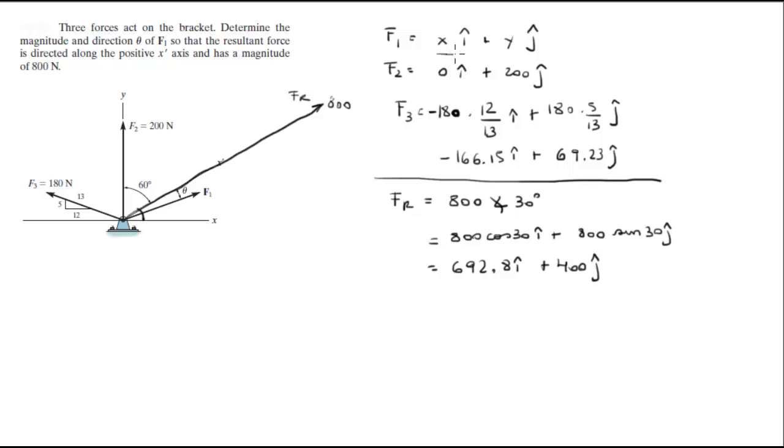Now all you got to do is add the x's together, and the x's are going to equal this number. So you get x plus 0 plus negative 166.15 is equal to 692.8. When you solve for x, you get that this is equal to 858.95 in the x direction.